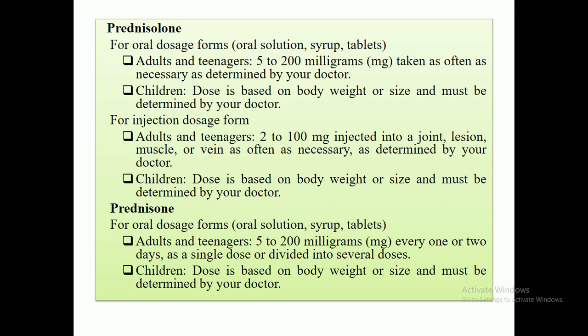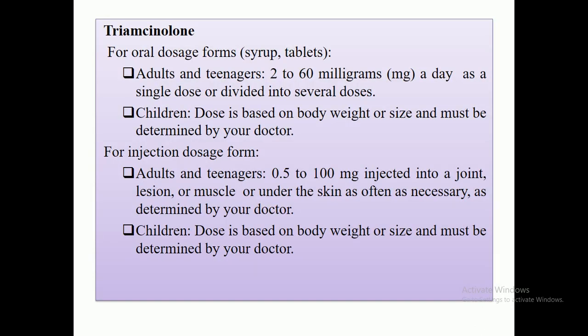Another anti-inflammatory agent in the corticosteroid group is prednisone. It is available in oral dosage forms — oral solution, syrup, and tablet. For adults and teenagers, the dose is 5 to 200 mg every one or two days as a single or divided dose. For children, the dose is based on body weight.